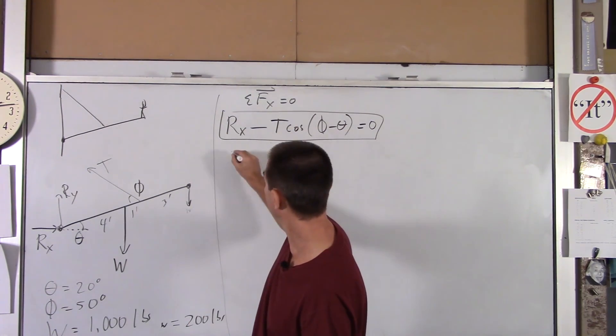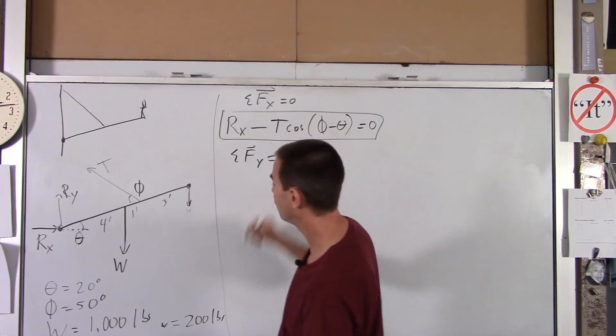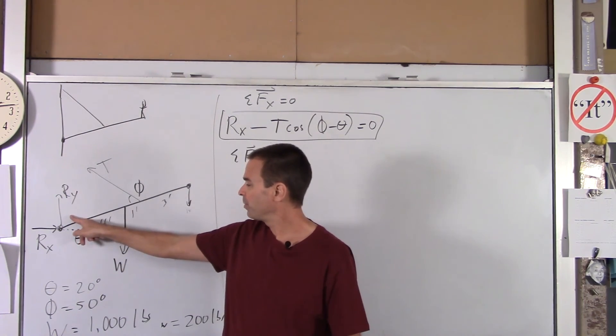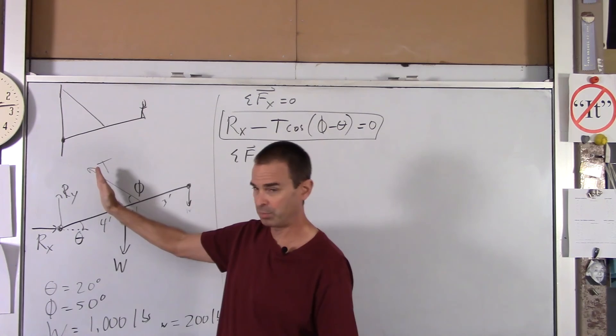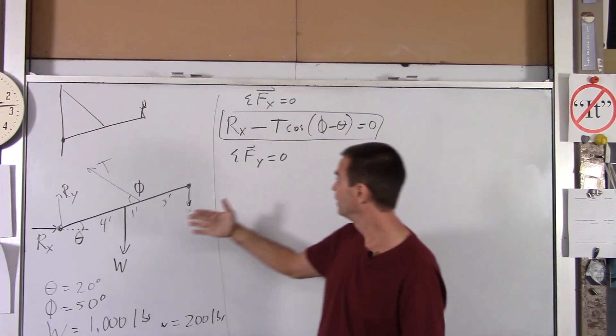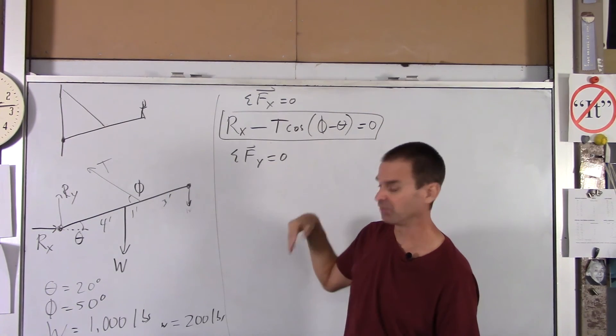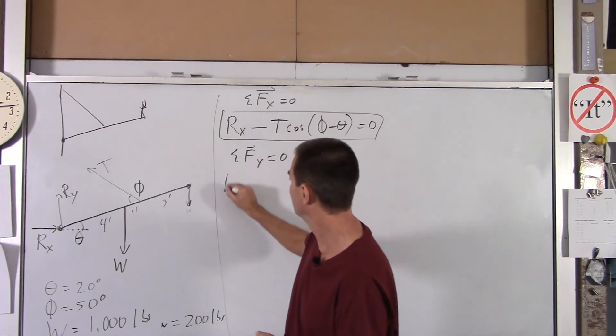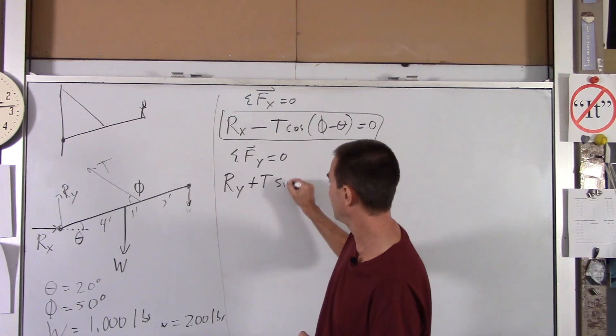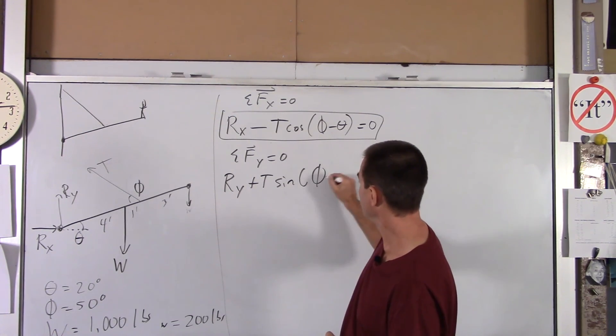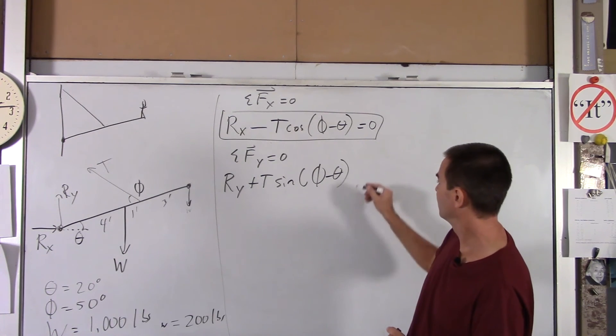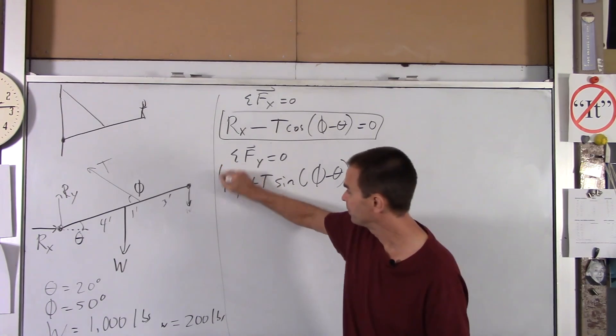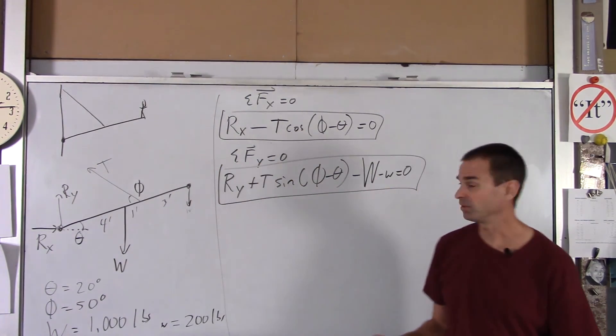The next equation we're going to do is vertical. So net force in the vertical equals 0. Well, here we've got a little more work to do. We have Ry pointing up. We have the component of tension pointing up, which similar to what we just said, it's going to be sine of phi minus theta for the same exact reason. And we have two different weights pointing down. So assuming up is positive, you're going to have Ry plus T sine of phi minus theta, minus big W minus little w equals 0. So there is our second equation, but we still have three unknowns.